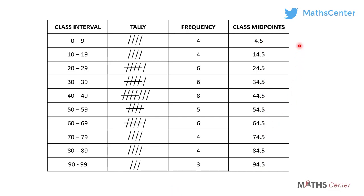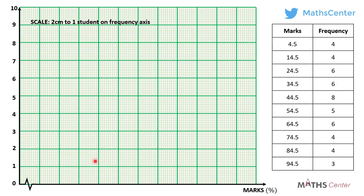Remember that on the histogram we are going to draw the frequencies on the vertical axis and the class midpoints on the horizontal axis. Let's do that on the graph sheet. On the vertical axis we have the frequencies, and on the horizontal axis we have the class midpoints, which represent the marks in percentage — so you have to indicate the unit. Looking at the values, I'm choosing a scale of 2 centimeters to 1 student on the frequency axis.